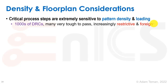Regarding density and floorplan considerations: in FinFET processes, the critical process steps are extremely sensitive to loading — pattern density really affects them. In previous planar technologies, we had a rule of thumb that 30 to 70% of a layer needed to be covered by metal. Now it's really problematic with all these process steps. Process loading is a real problem, and therefore we have thousands of DRCs that are very restrictive, hard to pass, and hard to understand. They're done to ensure less variation and to reduce layout-dependent effects.